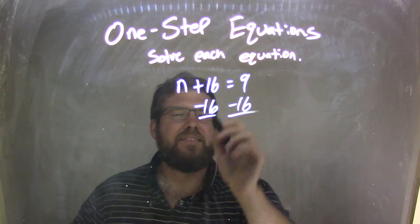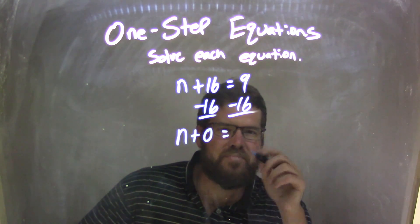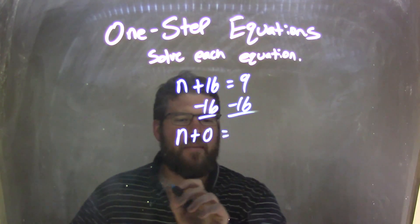Positive 16 minus 16 is just 0. So now, n plus 0 equals 9 minus 16. That's tricky. I'm going to use the number line.